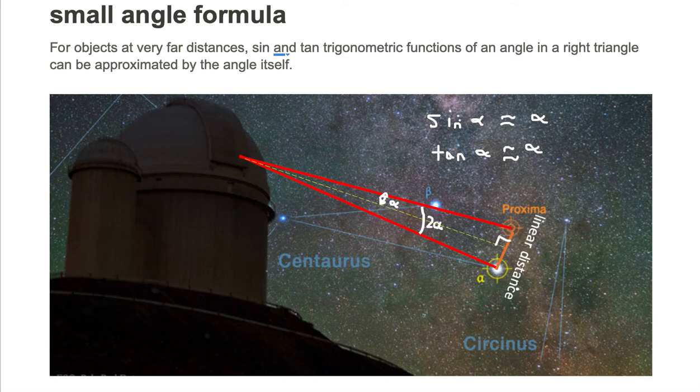They are separated by a linear distance 2L. Therefore, the orange portion of the right triangle is just a single L. It's half the distance between Alpha Centauri and Proxima Centauri.